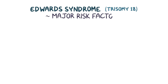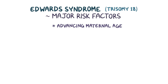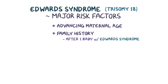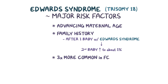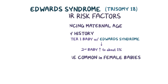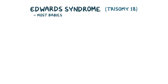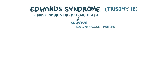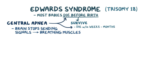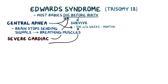A major risk factor for Edwards syndrome is advancing maternal age. Another important risk factor is family history. After having one child with Edwards syndrome, the risk of having a second baby with Edwards syndrome increases and is typically around 1%. Edwards syndrome is also three times more common in female babies. Most babies with Edwards syndrome die before birth, but even those that survive usually die within a few weeks to months after birth, usually due to central apnea — when the brain stops sending signals to the breathing muscles and breathing stops — or due to severe cardiac abnormalities.